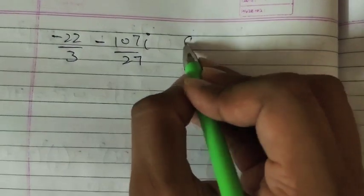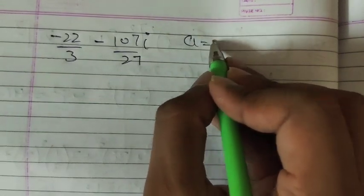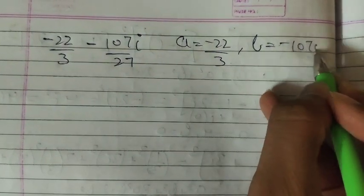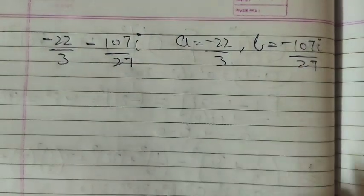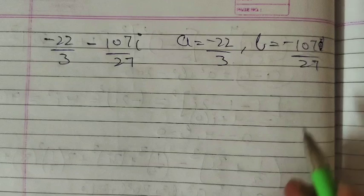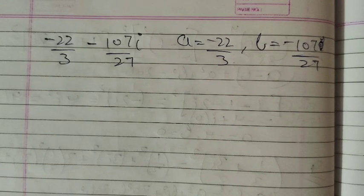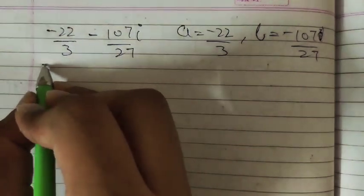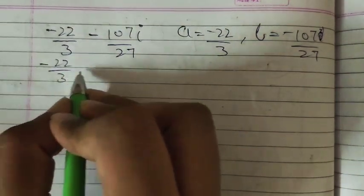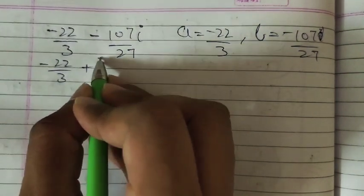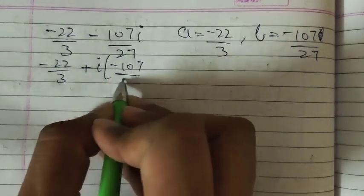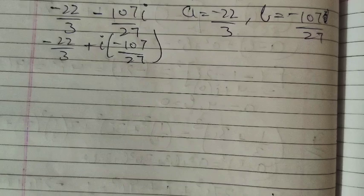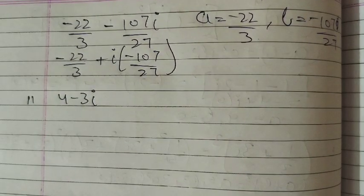So a = minus 22/3, b = minus 107/27. We can write this as minus 22/3 plus ι(minus 107/27). This is our answer. Next is question number 11.